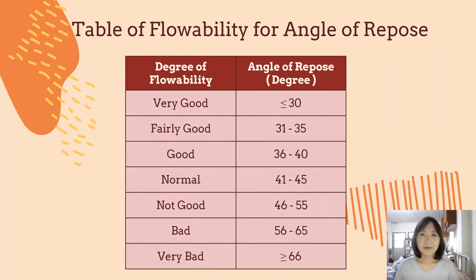Now let's look at the table of flowability from angle of repose. We can know the efficiency of flowability by consulting this table. A low angle of repose makes the powder flowability standard and acceptable to the factory.